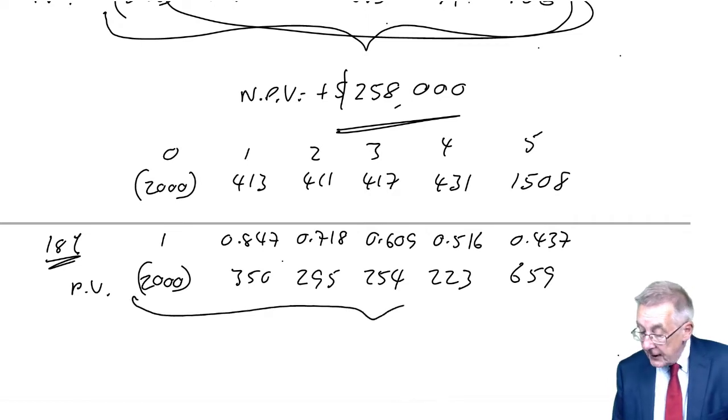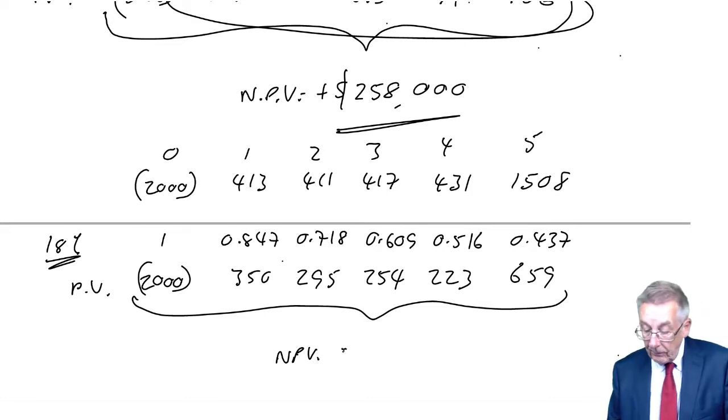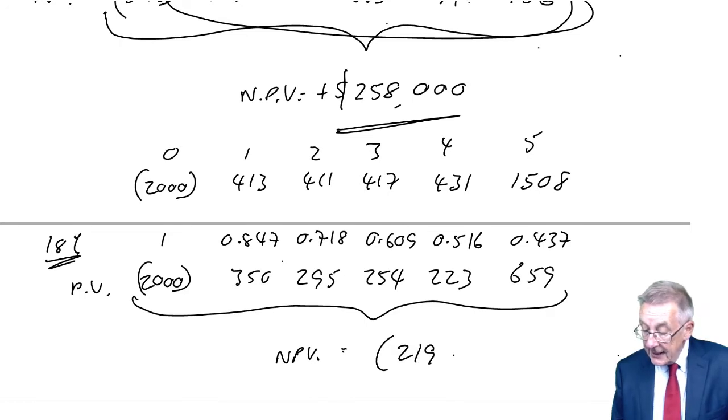So what's the net present value at 18%? 350, 295, 254, 223, 659, minus 2000. It's minus 219,000.